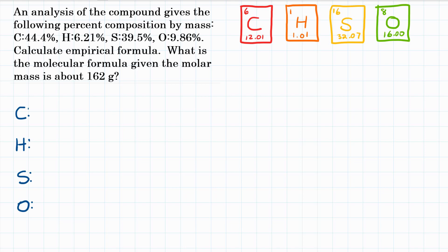If we had 100 grams of this compound, those percentages would be our exact masses, because 44.4% of 100 grams is 44.4 grams. So that's how much carbon we would have given 100 grams of this. For hydrogen, 6.21 grams,